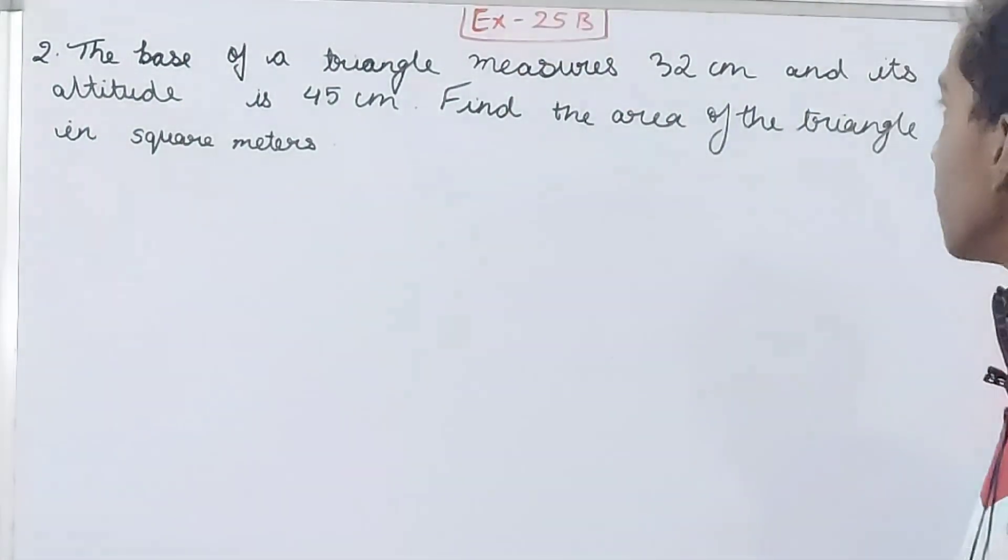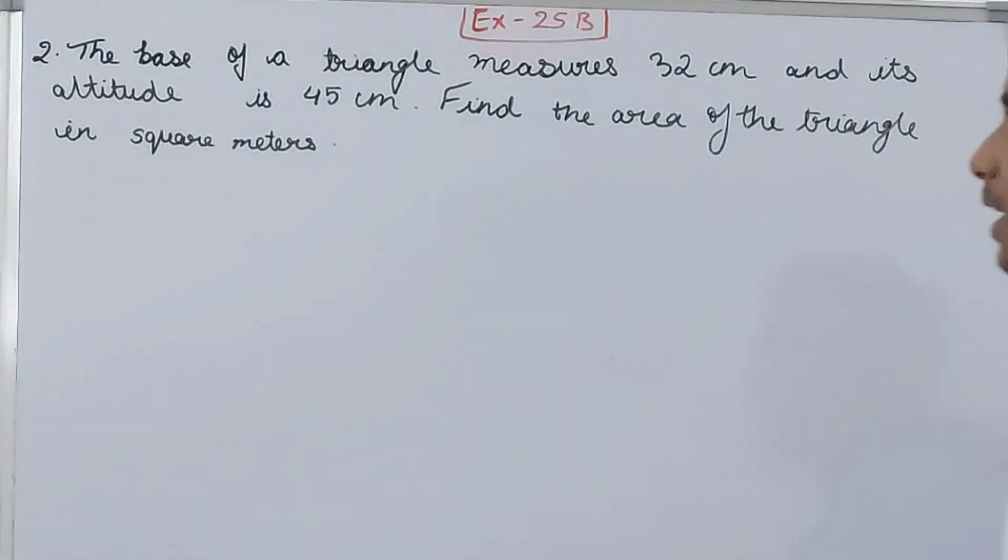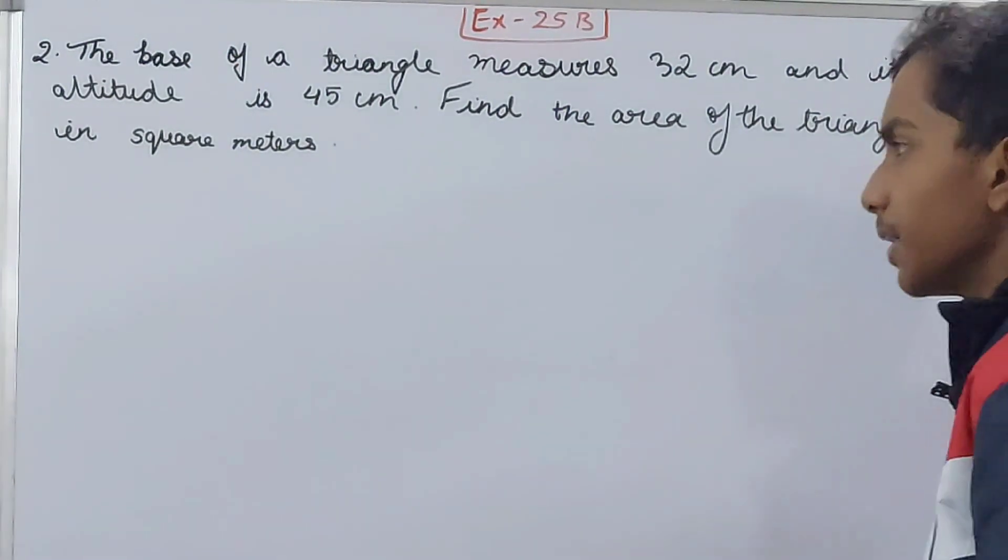The base of a triangle measures 32 centimeters and its altitude is 45 centimeters. Find the area of the triangle in square meters.